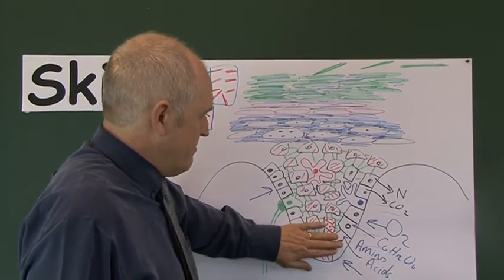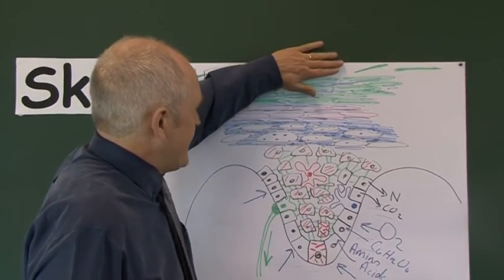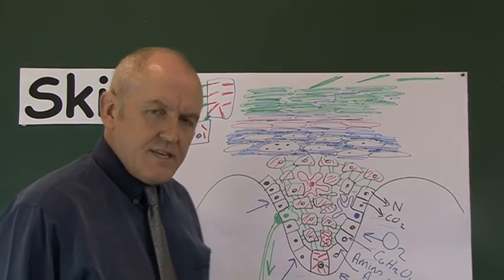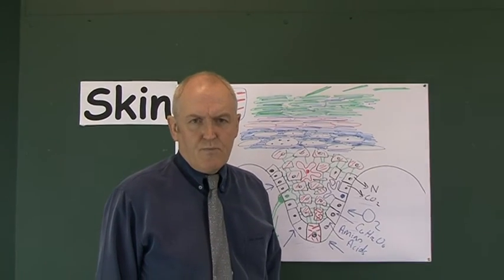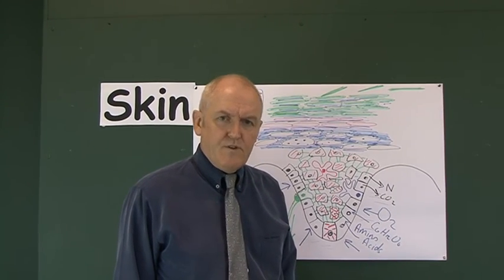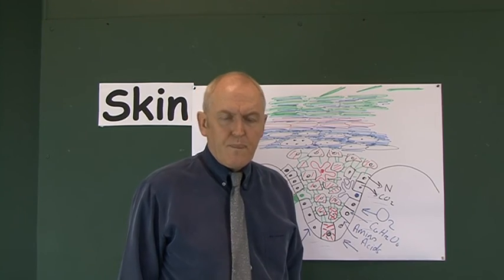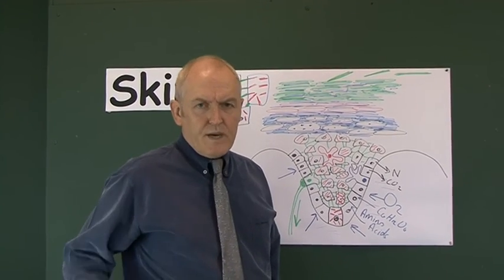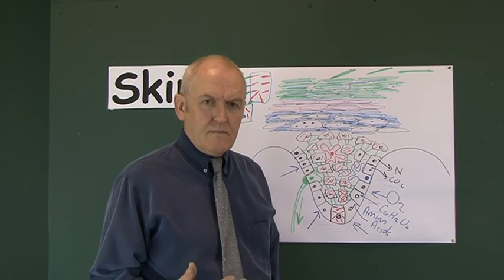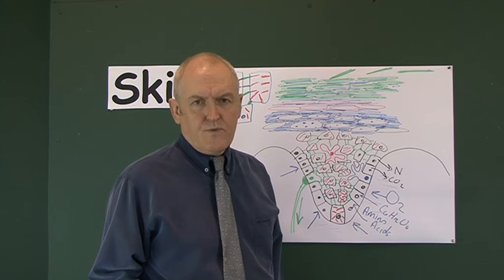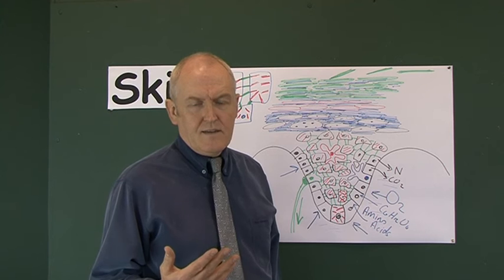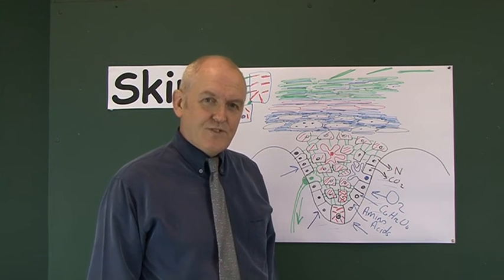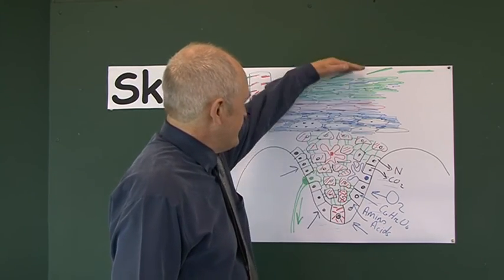This whole process from the basal layer until a cell is sloughed off doesn't take very long. Different values are quoted, but in young people it's probably four or five weeks; in older people it's probably six, seven, or eight weeks, but not more than eight weeks. So when I look in the mirror in the morning, the skin I'm looking at is no more than two months old.